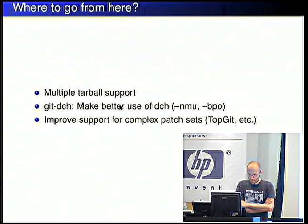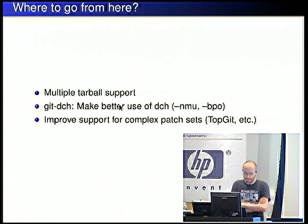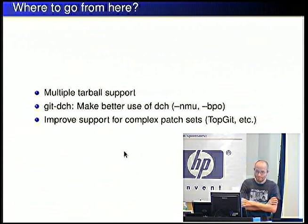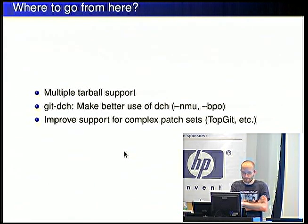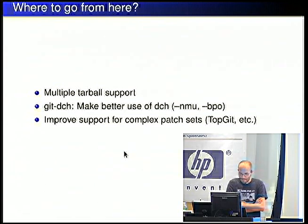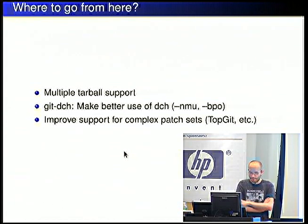Where is git-build-package not doing great? It has no real support for multiple tarballs yet — there's a patch still to integrate, so that's work in progress. `git-dch` should make better use of `dch` itself so NMUs, BPOs, backports.org uploads, and QA uploads are easier to handle. Support for complex patch systems like TopGit or tnt should probably improve as well, but since I've never really used TopGit on a project myself, any pointers would be very welcome.